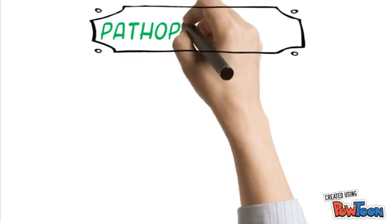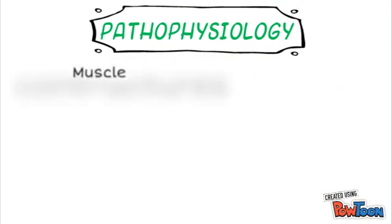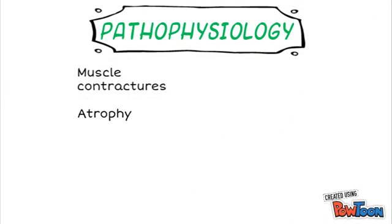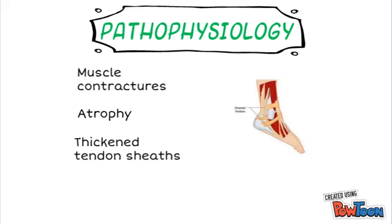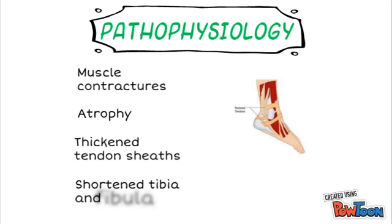Clubfoot deformity is caused by muscle contractures, atrophy and thickening of tendon sheaths, especially tibialis posterior, the peroneal tendons and the plantar fascia. Shortening of the tibia and fibula is sometimes observed.